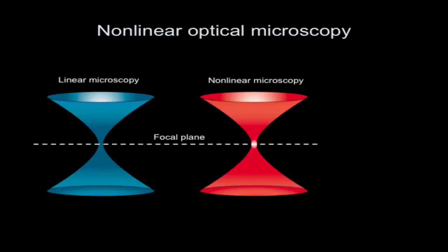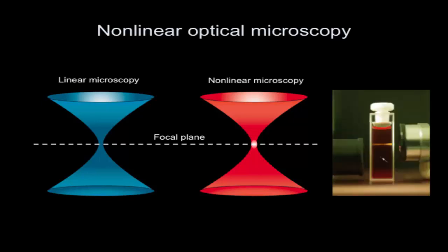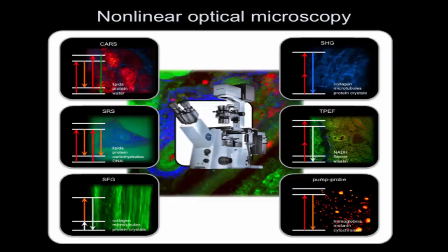Nonlinear microscopy does the confinement on the excitation side. This famous image makes the point beautifully: that tiny spot is what happens in nonlinear optical microscopy excitation, while in linear you have this whole cone that responds. It's a dramatic difference.